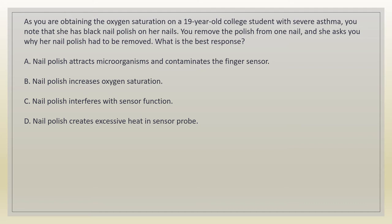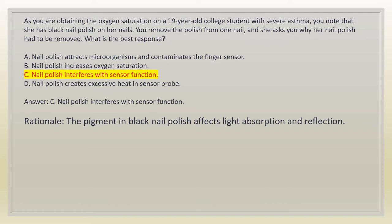As you are obtaining the oxygen saturation on a 19-year-old college student with severe asthma, you know that she has black nail polish on her nails. You remove the polish from one nail, and she asks why her nail polish had to be removed. What is the best response? A. Nail polish attracts microorganisms and contaminates the finger sensor. B. Nail polish increases oxygen saturation. C. Nail polish interferes with sensor function. D. Nail polish creates excessive heat in the sensor probe. Answer: C. Nail polish interferes with sensor function. Rationale: the pigment in black nail polish affects light absorption and reflection.